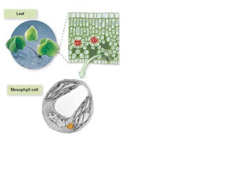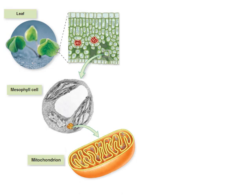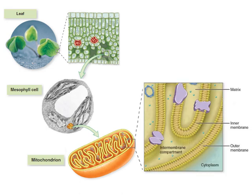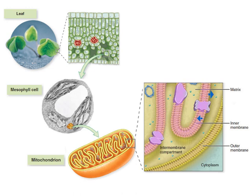All eukaryotes have mitochondria. Let's focus on a plant. Each plant consists of several cells, each of which have mitochondria. A mitochondria has an outer membrane and an inner membrane. Between the outer and inner membranes is a space called the intermembrane compartment. The inner membrane encloses fluid called the matrix. The reactions of the electron transport chain occur across the inner membrane of the mitochondria.